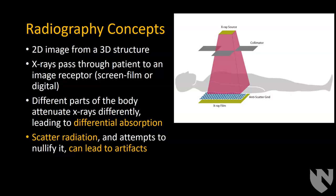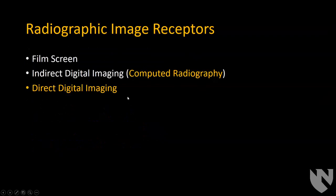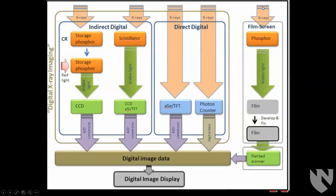Different parts of the body will attenuate x-rays differently, leading to differential absorption, which makes something appear more white or black. Things like scatter radiation and attempts to limit scatter can lead to artifacts. The image receptor options are film screen, direct digital imaging, and indirect digital imaging, also called computed radiography. In film screen, the x-rays hit a phosphor that converts them into light, the light exposes the film, and the film gets developed. You might then scan it to make it digital, or just view it as film.